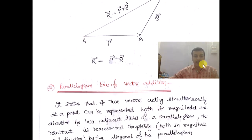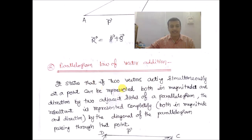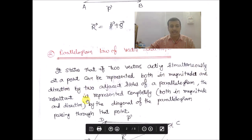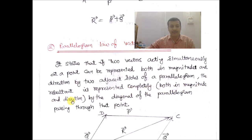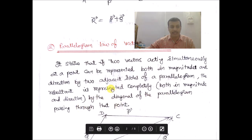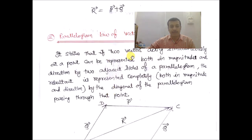The parallelogram law of vector addition states that if two vectors acting simultaneously at a point can be represented both in magnitude and direction by two adjacent sides of a parallelogram, the resultant is represented completely both in magnitude as well as direction by the diagonal of the parallelogram passing through that common initial point.